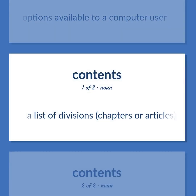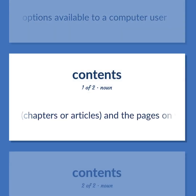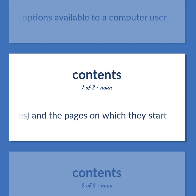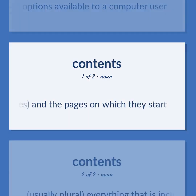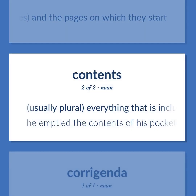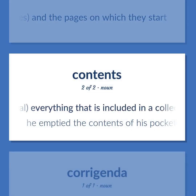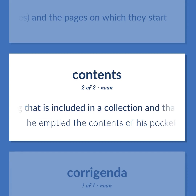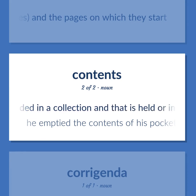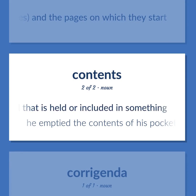Contents / Table of contents: A list of divisions, chapters, or articles and the pages on which they start. Usually plural, everything that is included in a collection and that is held or included in something — 'He emptied the contents of his pockets.'